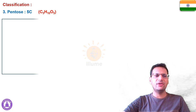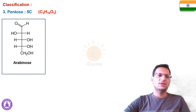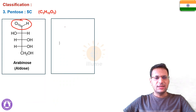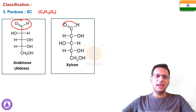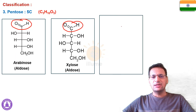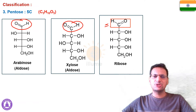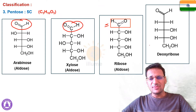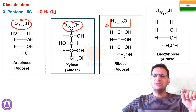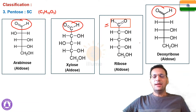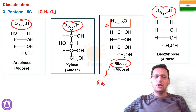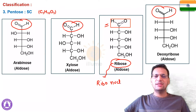Pentoses are five-carbon sugars with the formula C₅H₁₀O₅. Examples include arabinose (aldose), xylose (aldose), ribose (aldose), and deoxyribose (also an aldose sugar).